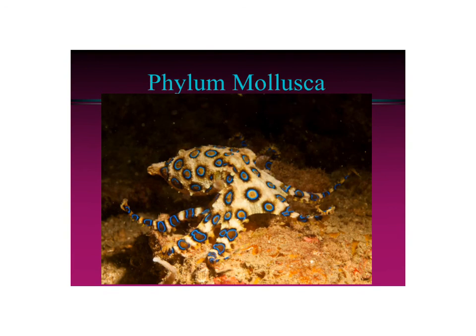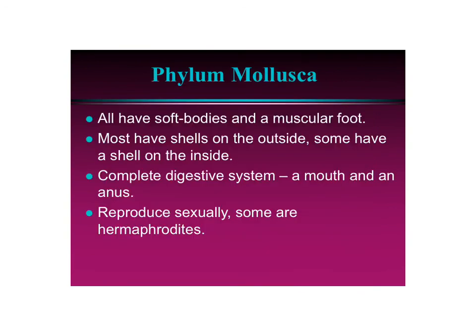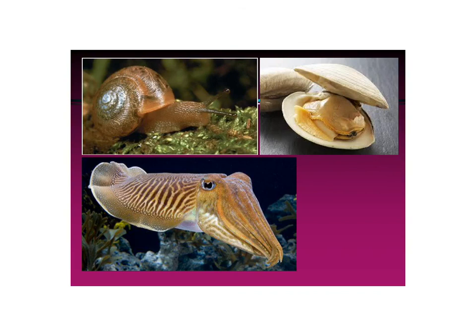The next group is the mollusks — phylum mollusca. All have soft bodies and a muscular foot; in some cases the foot is adapted to be arms, but most of the time it looks like a foot. Most of them have shells, although some have a shell on the inside and some have lost their shell entirely. They have a complete digestive system — a mouth and an anus — so food comes in and goes out different holes, meaning they can keep on eating. Mollusks can reproduce sexually, although some are hermaphrodites, meaning they have both male and female sex organs, so they can be either male or female in the reproductive process.